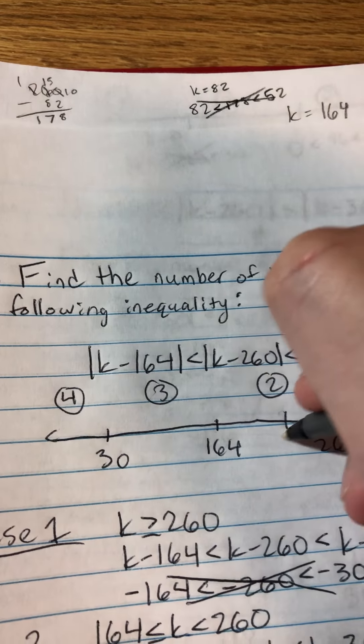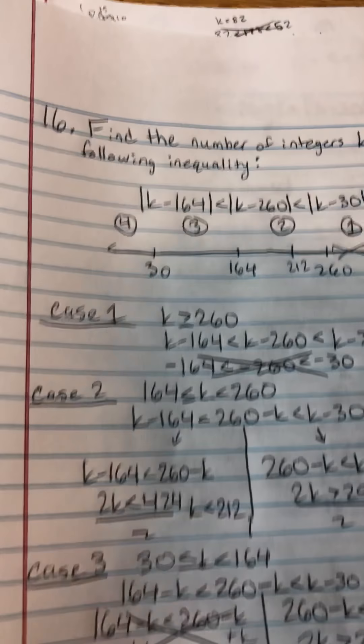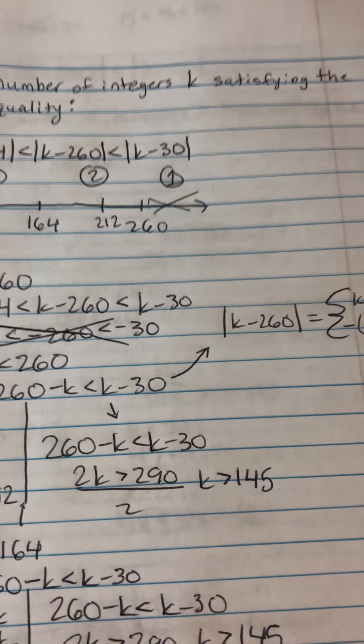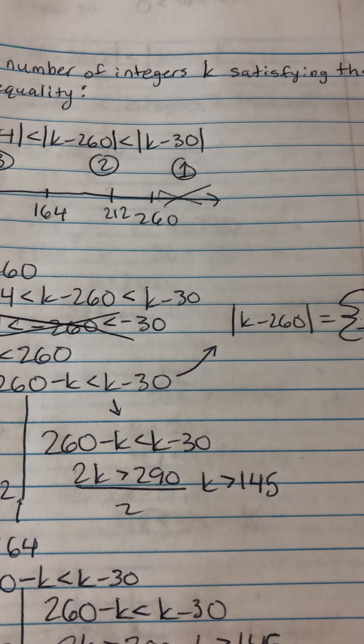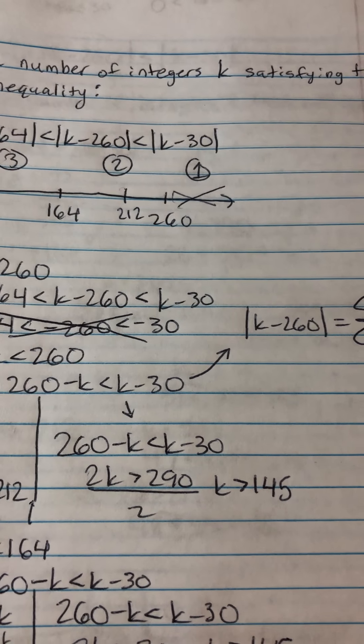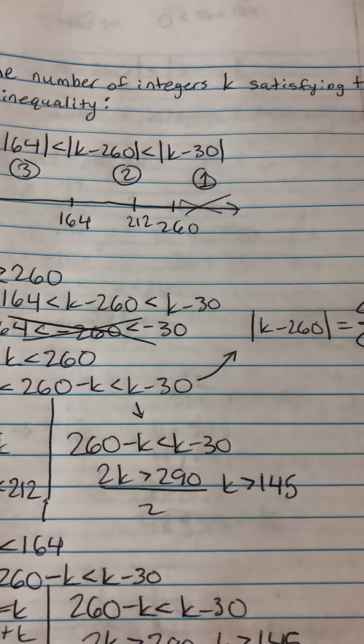So I'm going to mark 212. And then on the right side, I did 260 minus k is less than k minus 30. And I brought the k's together. So it would be 2k is greater than 290 divided by 2.